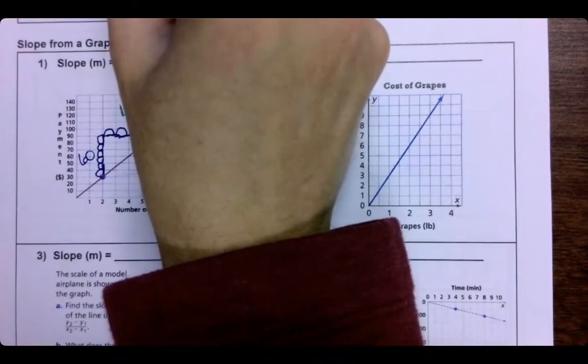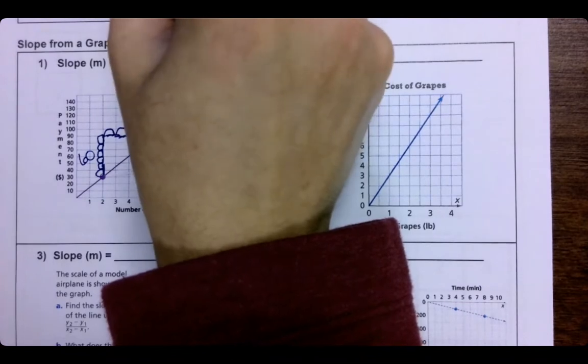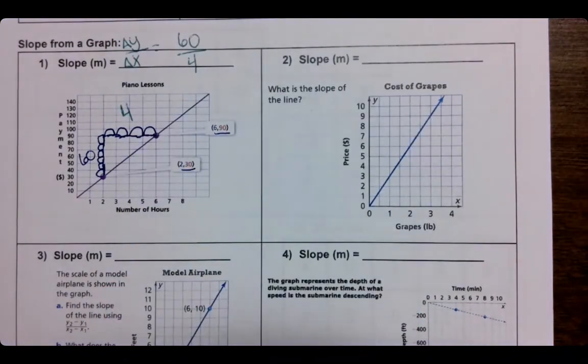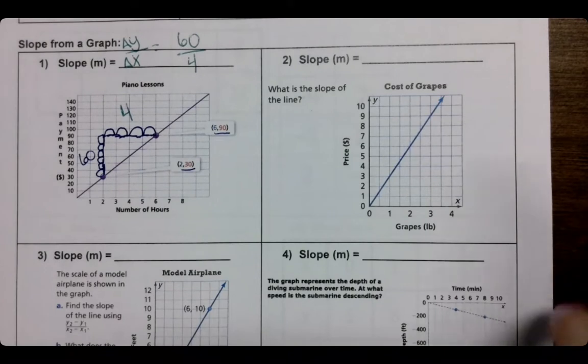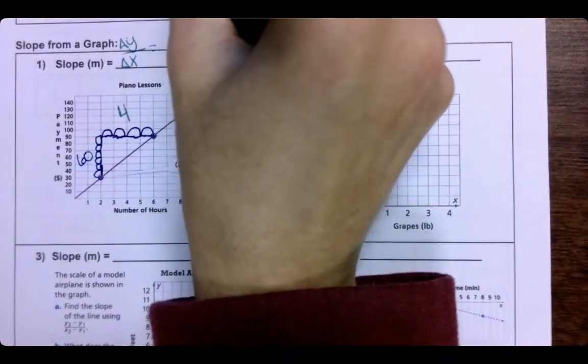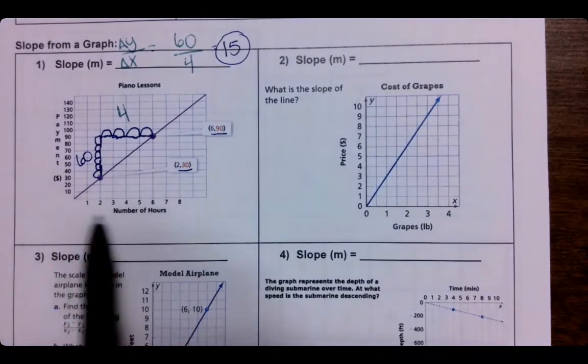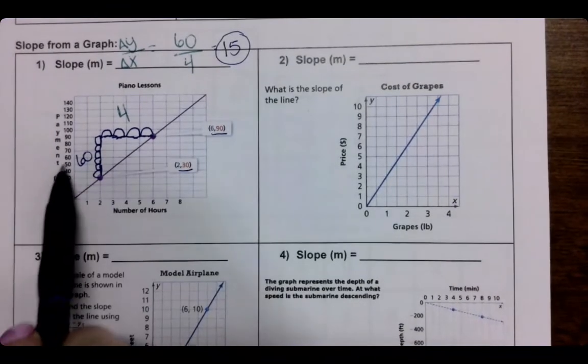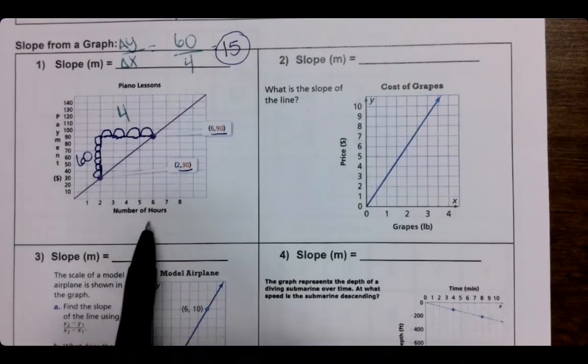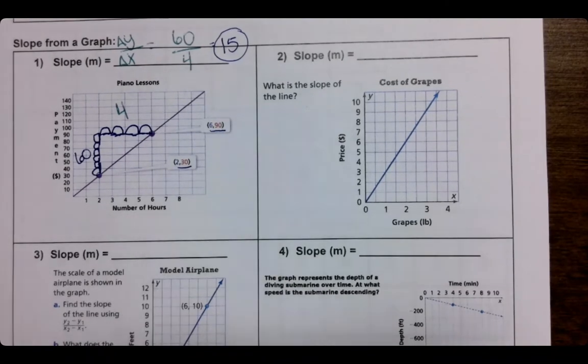So we are going to do 60 over 4. And if you put in Desmos or you just know what that is, 60 divided by 4 is 15. So that basically in context of this problem is $15 per hour.